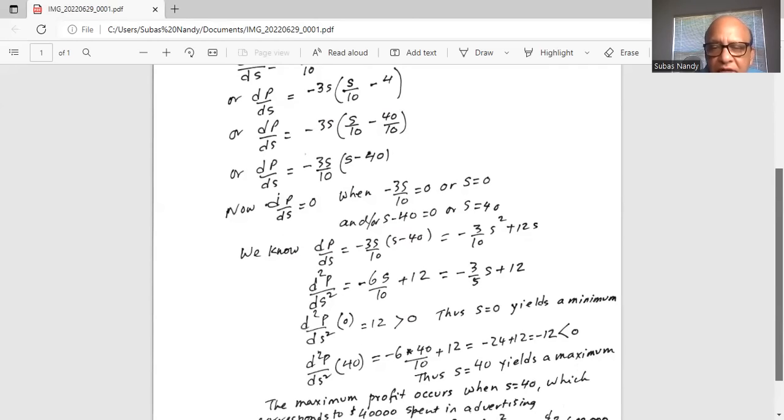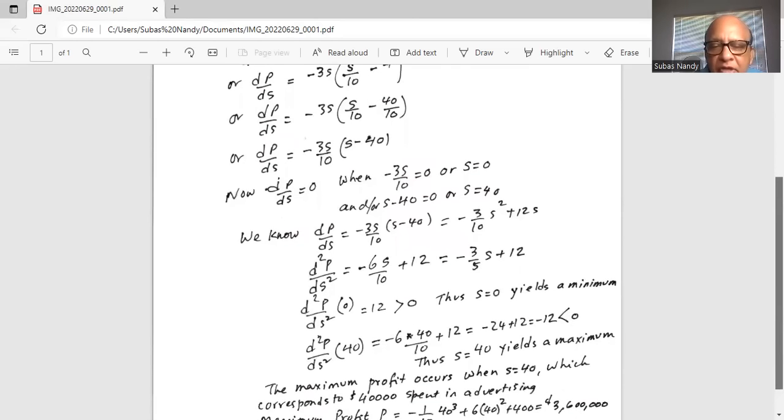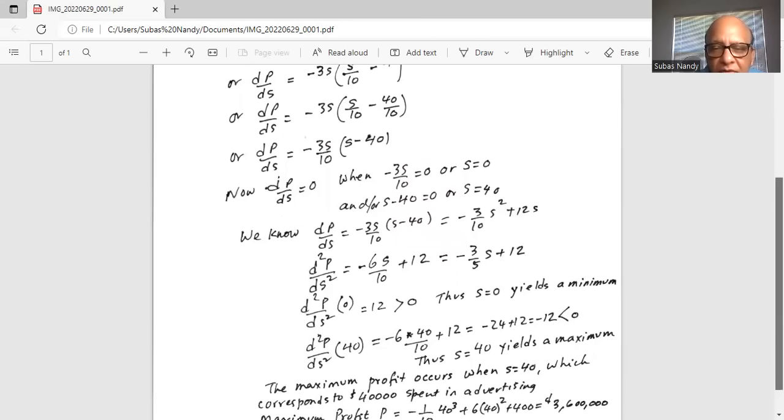So s is equal to 0 is a minimum, and second derivative of p with respect to s at s equal to 40 is negative minus 12 which is less than 0, thus s is equal to 40 is a maximum.